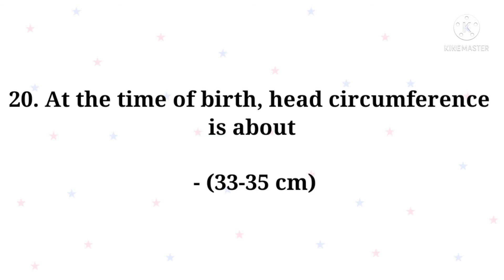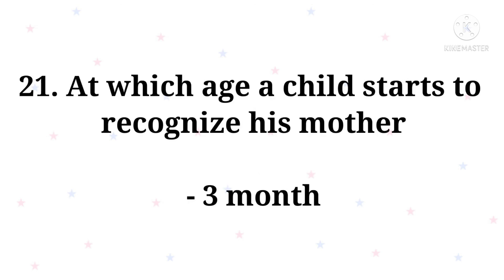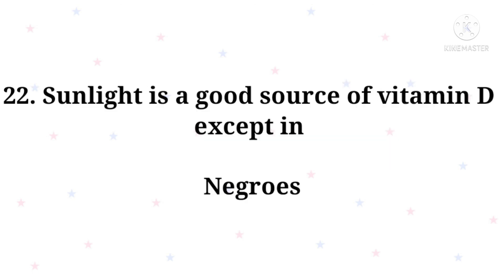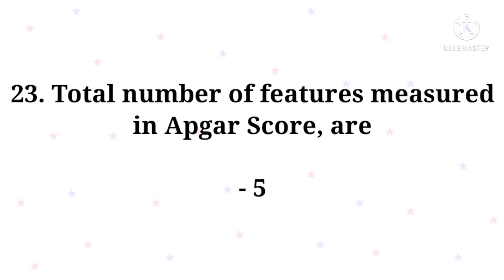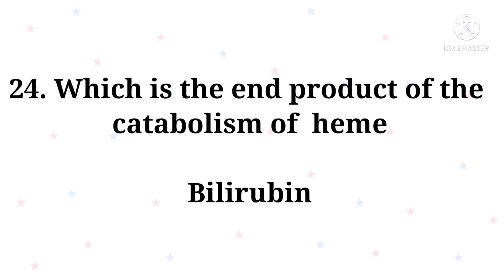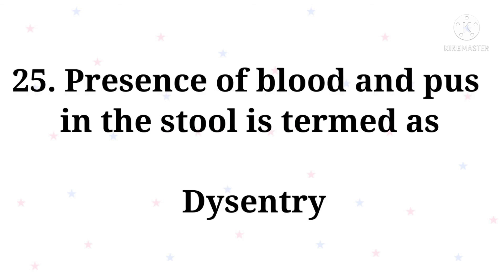At the time of birth, head circumference is about 33 to 35 centimeters. At which age does a child start to recognize his mother? Three months. Sunlight is a good source of vitamin D, except in negros. Total number of features measured in APGAR score are five. Which is the end product of the catabolism of heme? Bilirubin.